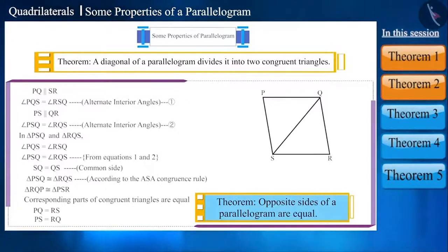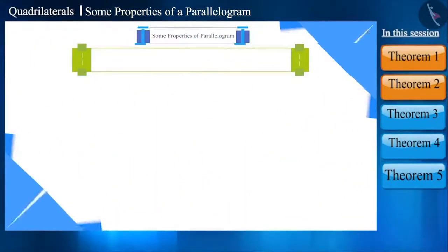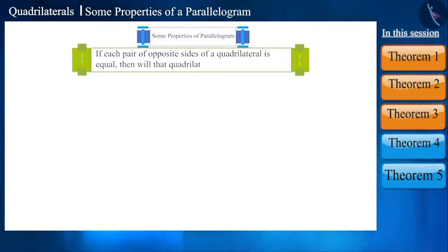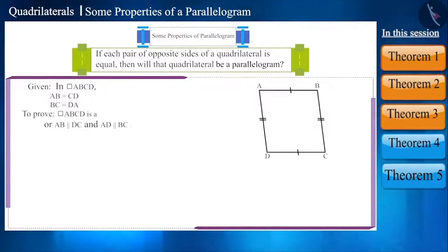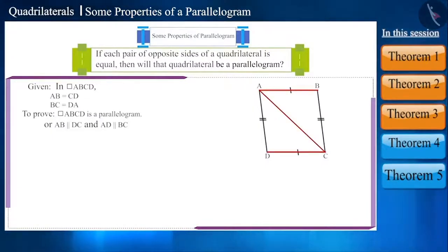Will the converse of this theorem also be true? That is, if each pair of opposite sides of a quadrilateral is equal, then will that quadrilateral be a parallelogram? Suppose the opposite sides of quadrilateral ABCD are equal — then we have to prove that it is a parallelogram. If we draw a diagonal AC, then the alternate angles formed by the intersection of sides AB and DC are equal, so these lines will be parallel.